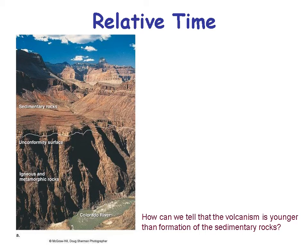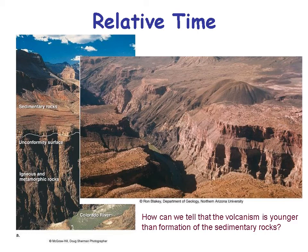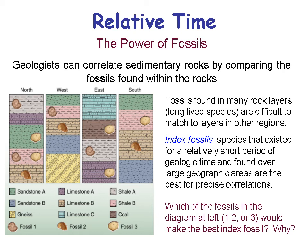How can we tell that volcanism is younger than the formation of the sedimentary rocks in the Grand Canyon? Because the volcanoes — here's a cinder cone — spill over the sedimentary rocks; the materials cut through the sedimentary rocks, and the lavas and ash have been deposited on top. Index fossils are useful for telling which sediments are younger or older than others, and that's critical in the oil business for knowing what type of rock you're looking at underground and whether it might contain oil.